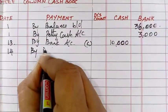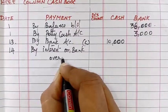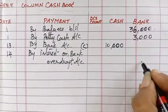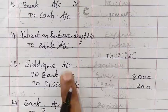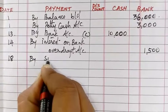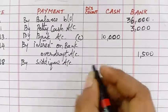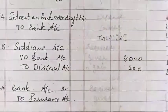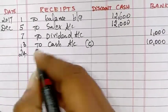Next, 14th date: bank credit side — come to credit side, write 'By Interest on Bank Overdraft Account', come to bank column and write 1,500. Next, 18th date: bank discount credit side — write 'By Siddhik Account', discount 200 rupees, bank 8,000 rupees. Next, 24th date: bank debit side — write number 24, write 'To Insurance Claim Account', write 17,000.